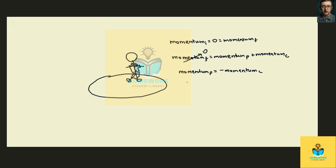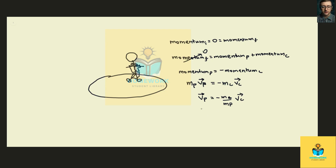The momentum of the person is just the mass of the person times the velocity that the person achieves after throwing their clothes. The velocity the person achieves is going to be negative — the mass of the clothes divided by the mass of the person, multiplied by the velocity at which the person throws the clothes. Since there's no friction in the pond, once the person throws their clothes, they'll keep moving at velocity VP until they reach the other side.